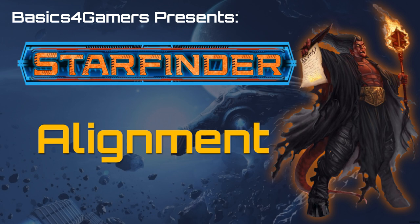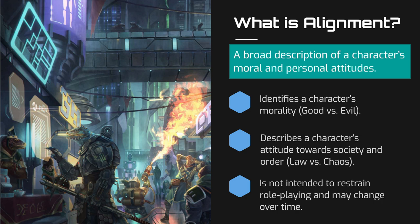But to start, we should take it back to the basics and go over exactly what alignment is. Alignment is a snapshot of a character's sense of morality and principles. Is your character an altruistic hero willing to sacrifice their own life to save others, or are they more selfish and only looking out for themselves? Does your character hold to society's laws, or would they rather just watch the world burn?